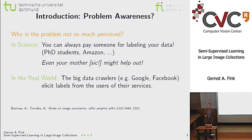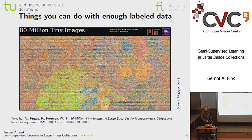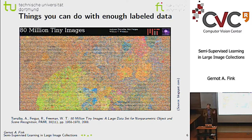In the real world, companies like Google and Facebook have business models where users voluntarily provide labels, so they don't really face the problem of learning without labels. If you have enough labeled data, you can do impressive things — like the 80 million tiny images project by Torralba and others. If you collect roughly 80 million images, scale them down to small size, and apply nearest neighbor classification, even such a primitive classifier can do a lot for frequent classes just from the sheer amount of data.